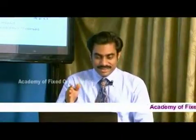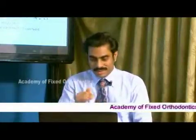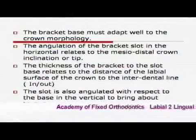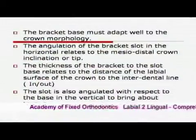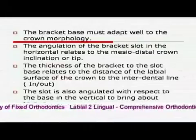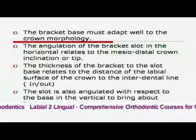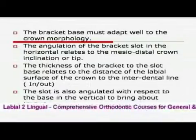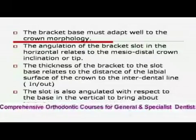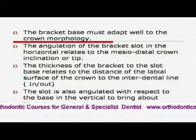The base, the slot point, and the base point are all in the same line. The bracket base must adapt well to the crown morphology. The angulation of the bracket slot in the horizontal leads to the mesiodistal crown inclination or tip. The thickness of the brackets, from slot to base, relates to the distance of the labial surface of the crown to the interdental line — that is the in-out. The slot is also angulated with respect to the base in the vertical to bring about the torque.